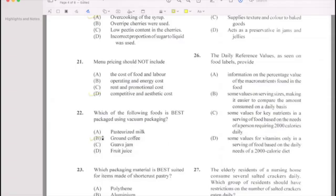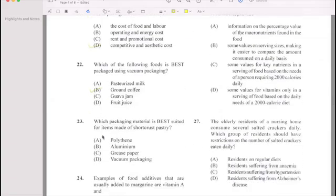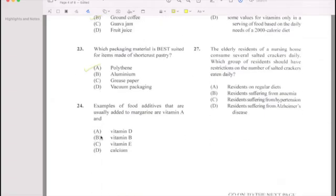Number 23: Which of the following material is best suited for making shortcrust pastry? Vitamin A. Number 24: Example of food additive that are usually added. Vitamin D. Number 23 is vitamin D. The answer is A.